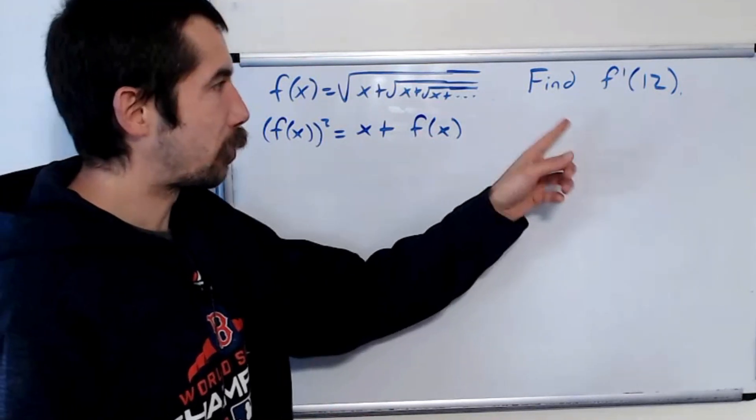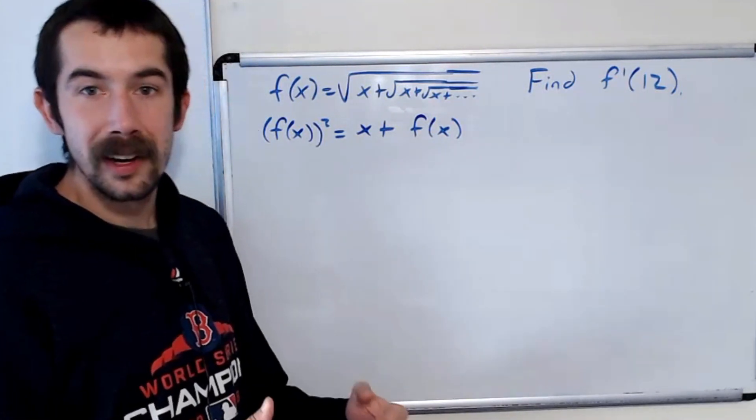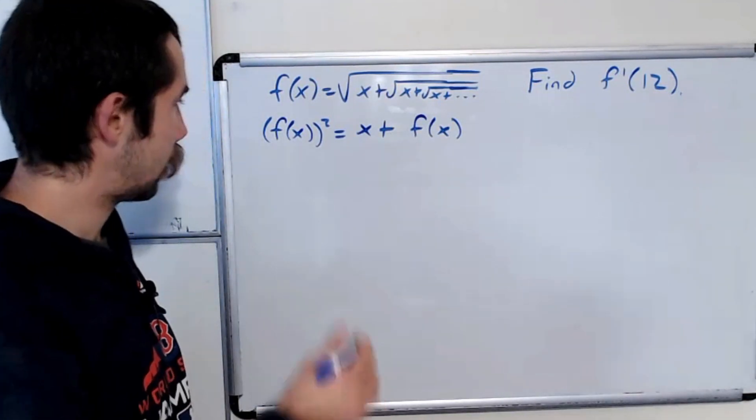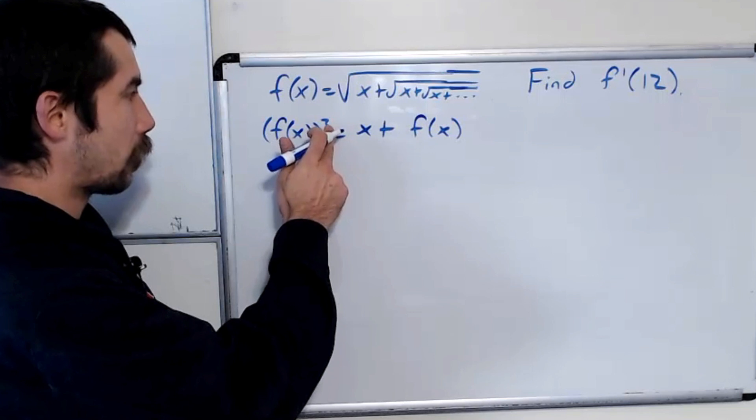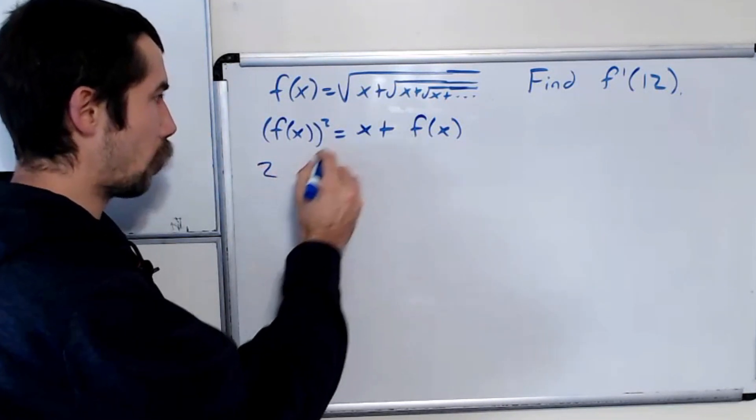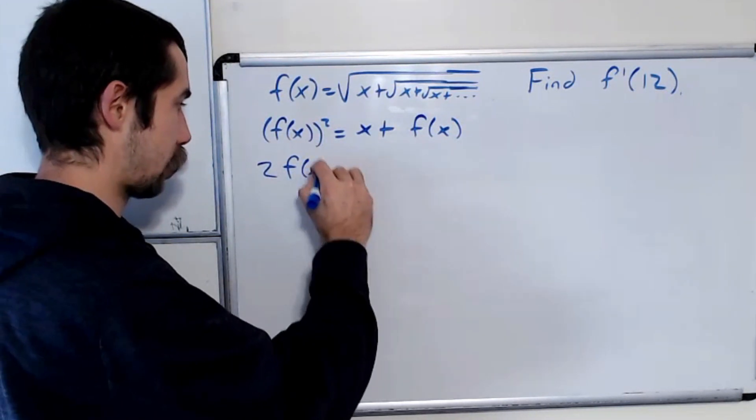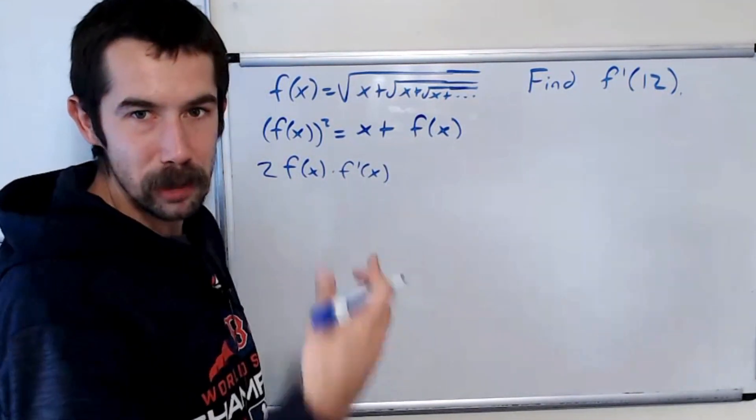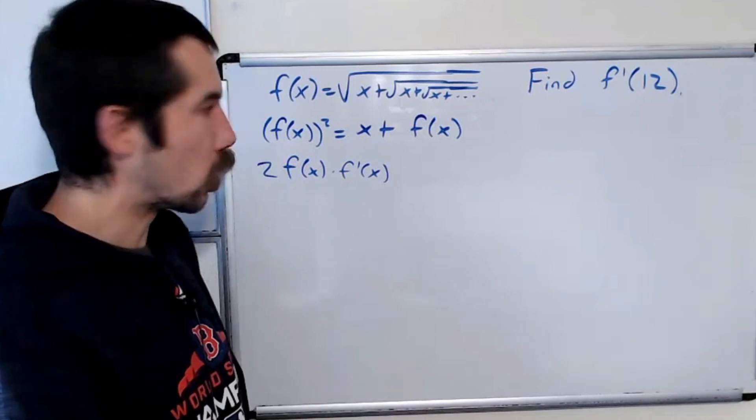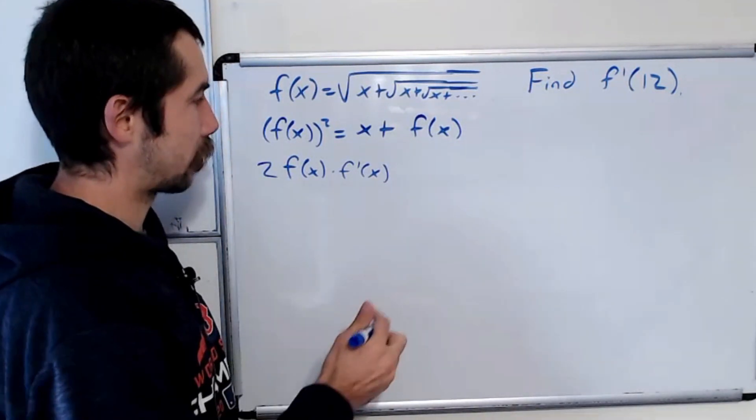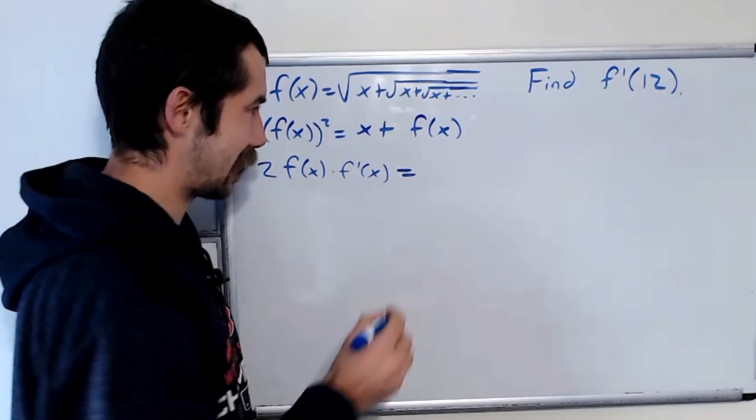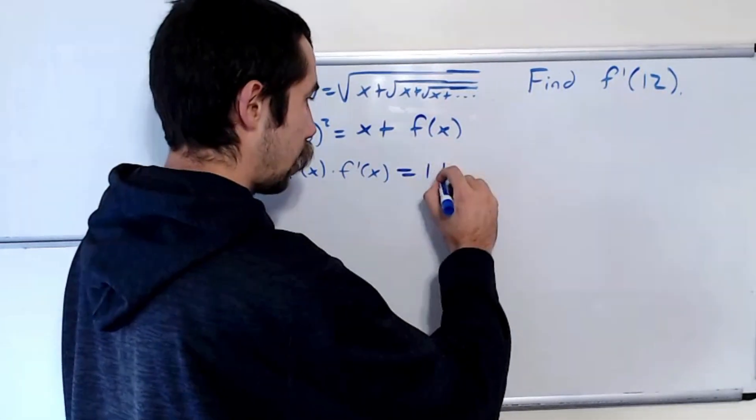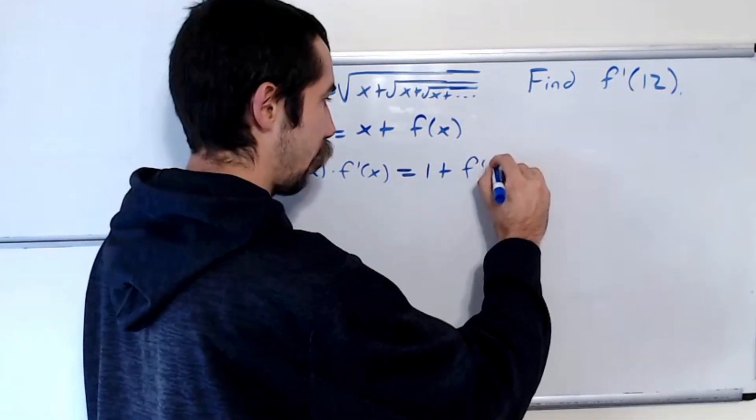Okay, and we want f prime of 12, so let's take the derivative of both sides of this equation. Okay, so the derivative of the left-hand side is 2 f of x times f prime of x. So that's the chain rule, or as my friend Dr. Payan would say, the Chen Liu, gives us f prime of x. On the right-hand side, the derivative of x is just 1, and the derivative of f of x is f prime of x.